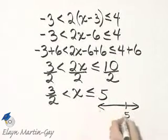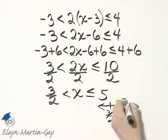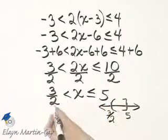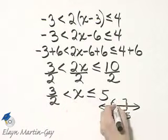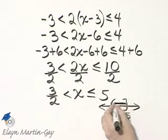Here's 5, here's 3 halves, that would be a bracket on 5, and a parenthesis on 3 halves because of the inequality symbols, and I would be shading everywhere in between.